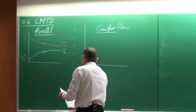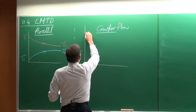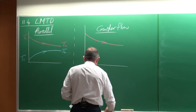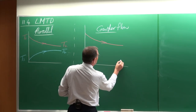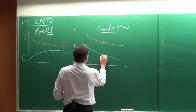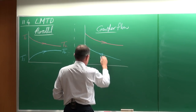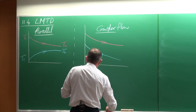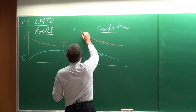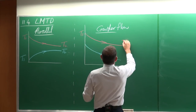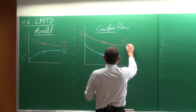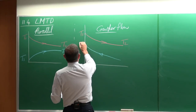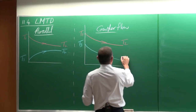With a counter flow heat exchanger, we will have one stream flowing in one direction and the other stream flowing in the opposite direction. Again, we can refer to those temperatures as T1 and T2 for one stream, and T3 and T4 for the other stream.